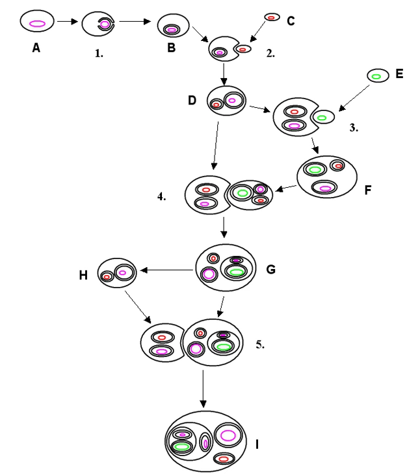Examples are nitrogen-fixing bacteria called rhizobia, which live in root nodules on legume roots, single-cell algae inside reef-building corals, and bacterial endosymbionts that provide essential nutrients to about 10-15% of insects.